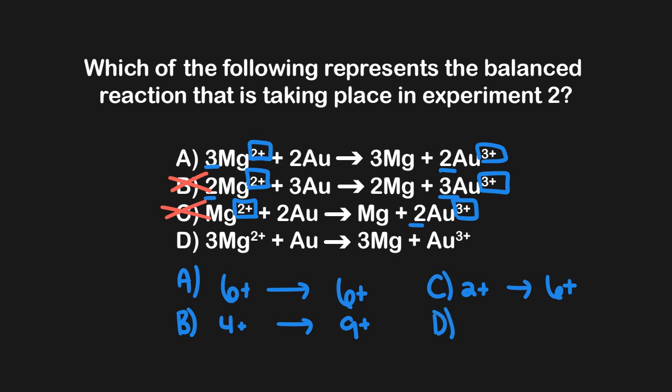Lastly, let's look at D now. Here we have 3Mg2+. That would be 6+, on this side. And then when we come over here, since there's anything charged over there, we have a single Au. So that would be going to 3+. Okay, in this case, A has to be the correct answer. And we can tell that just by looking at the charges.